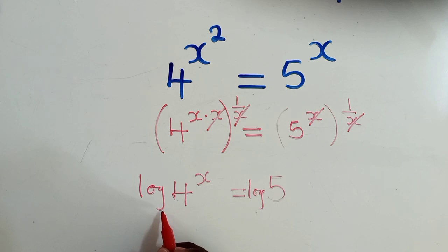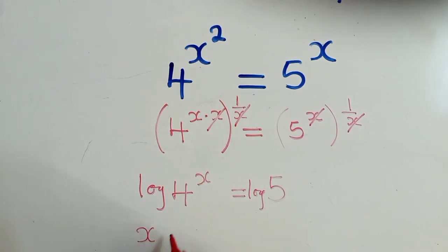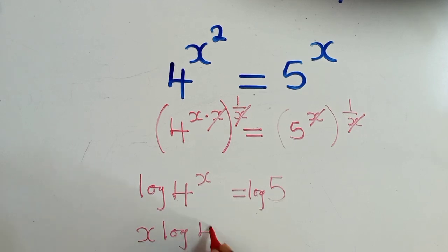So the log, if you know the rules of logs, you know that when you apply a log and there's a power here, this power will come to this side. So we shall have x log 4 is equal to log 5.